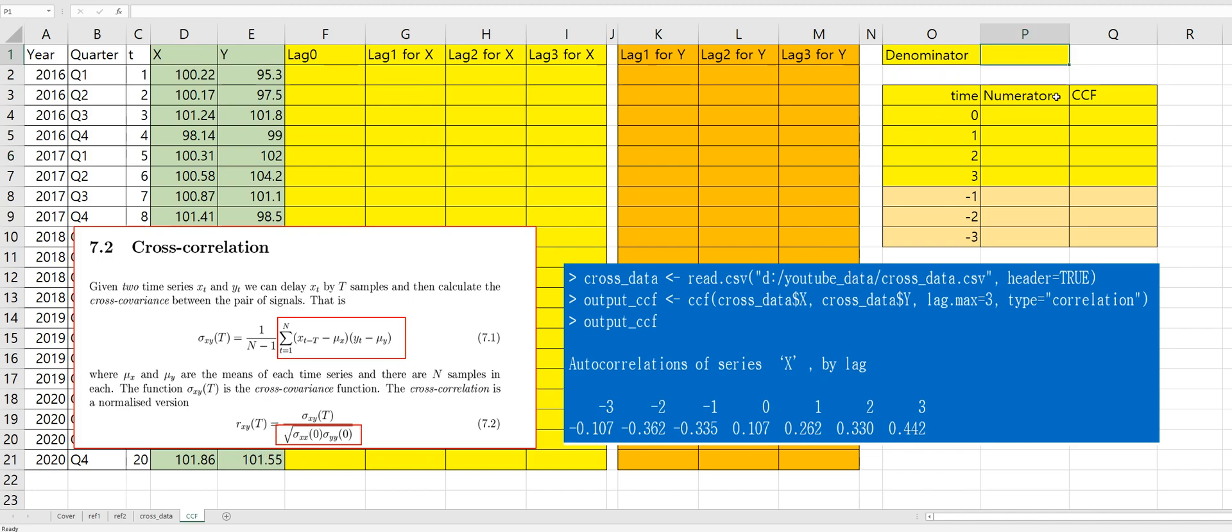So, let's get denominator first. We can calculate denominator value by using square root of the DEVSQ of X variable and times the DEVSQ of Y variable. Alright.